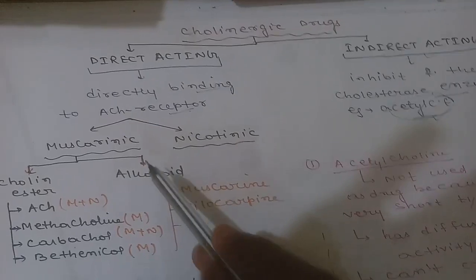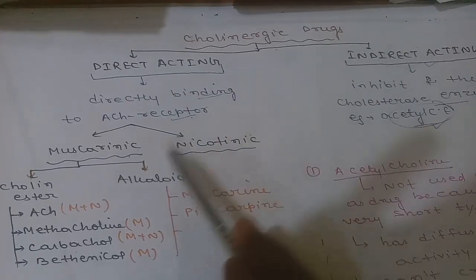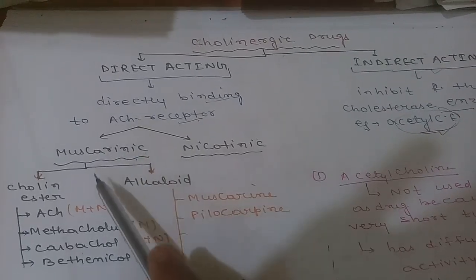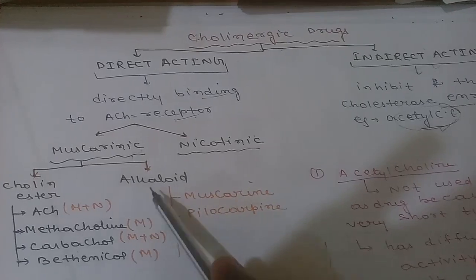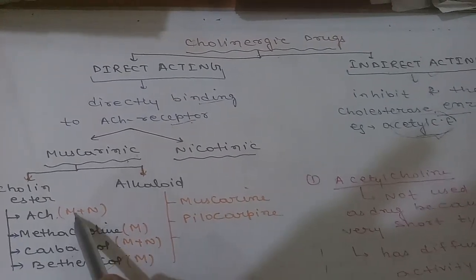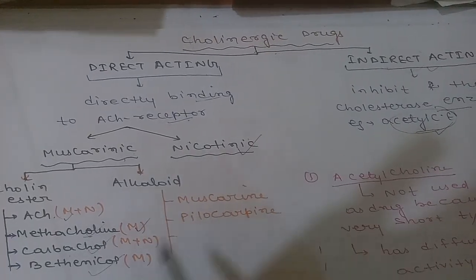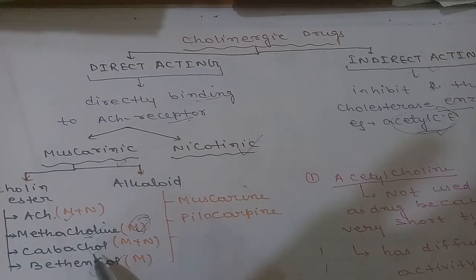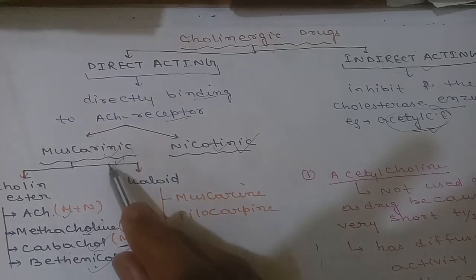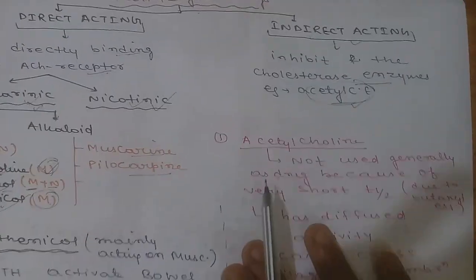Muscarinic receptor stimulating drugs are divided into two groups: cholinesters and alkaloids. In cholinesters there are four drugs: acetylcholine, methacholine, carbachol, and bethanechol. Acetylcholine stimulates both muscarinic and nicotinic receptors. Methacholine is mainly responsible for muscarinic stimulation. Carbachol stimulates both muscarinic and nicotinic receptors. Bethanechol acts on muscarinic receptors only. Among alkaloids: muscarine and pilocarpine.